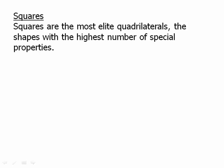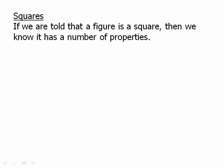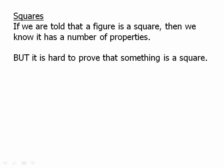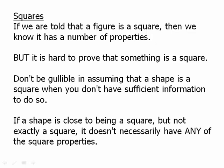Finally, let's talk about squares. Squares are the most elite quadrilaterals — the shape with the highest number of special properties. A square is a rectangle, a square is a rhombus, and a square is a parallelogram. So it has all the rectangle properties, all the parallelogram properties, and all the rhombus properties — it's a very, very special shape. If the test problem says a shape is a square, they're giving us a ton of information. But it's very hard to prove that something is a square. Don't be gullible in assuming a shape is a square without sufficient information — that is one very common trap on the test.